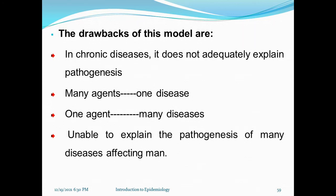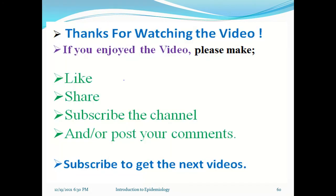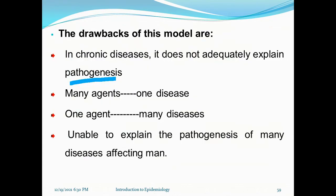Now we see the drawbacks of this model. In chronic disease, it does not adequately explain pathogenesis. One agent may cause many diseases, so it is unable to explain the pathogenesis of many diseases affecting humans. This is a drawback of the epidemiological triad model.